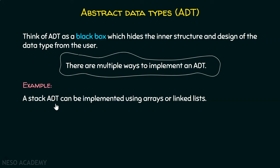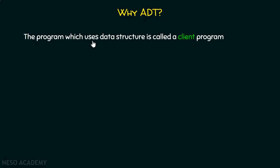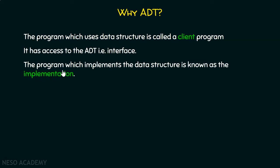A stack ADT, which is right now just a skeleton, can be implemented using arrays or linked lists. The program which uses a data structure is called a client program — it has access to the ADT, that is the interface, and nothing else. The program which implements the data structure is called the implementation. So we have two programs: the client program and the implementation.